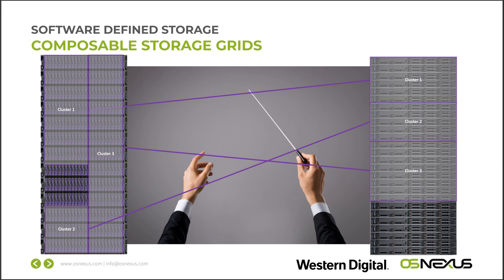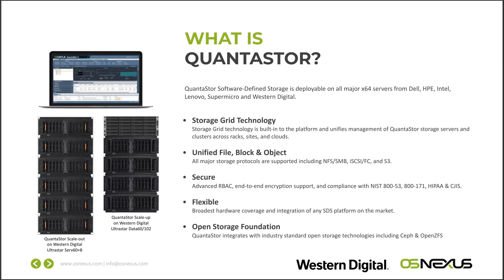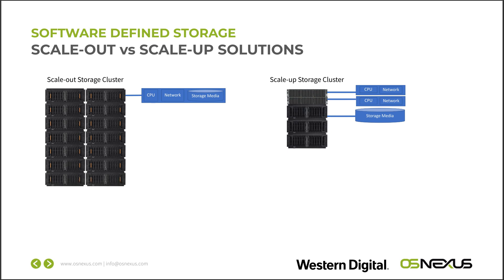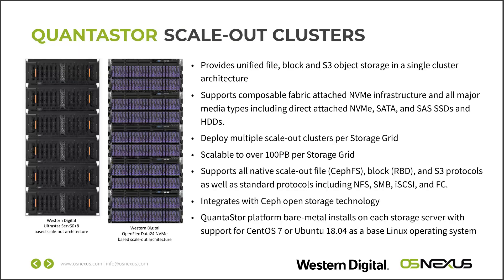We have a lot of storage specialists on the line, so let's go back to scale up and scale out and touch on some key features of each. The scale out clusters do file, block, and object. File means the standard NFS and SMB protocols, plus all the standard things like snapshotting. Besides NFS, SMB, iSCSI, and Fiber Channel, because we're using Ceph technology you can also use native protocols — there's an RBD block protocol directly supported by OpenStack and some other hypervisor stacks.